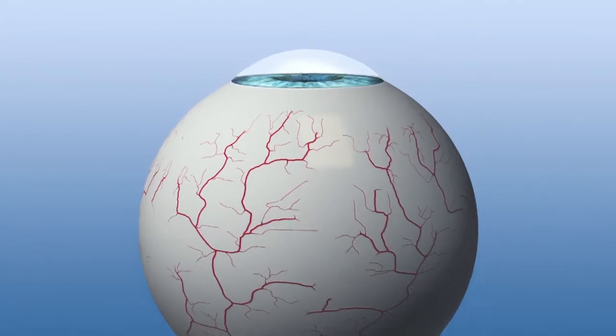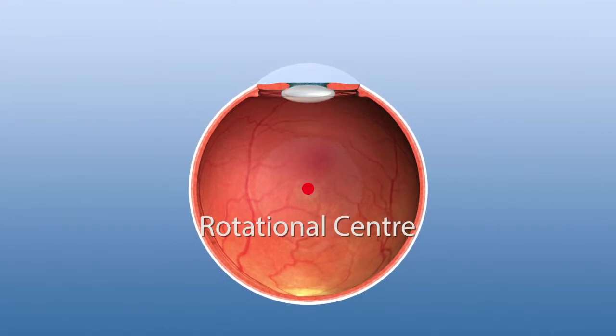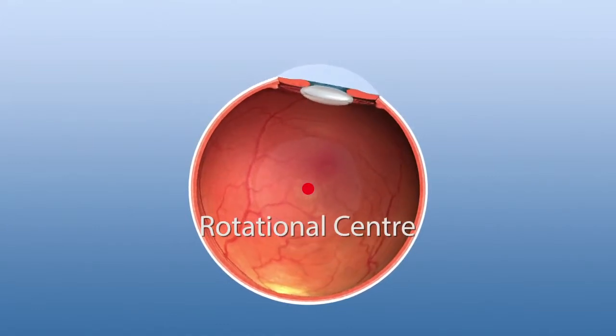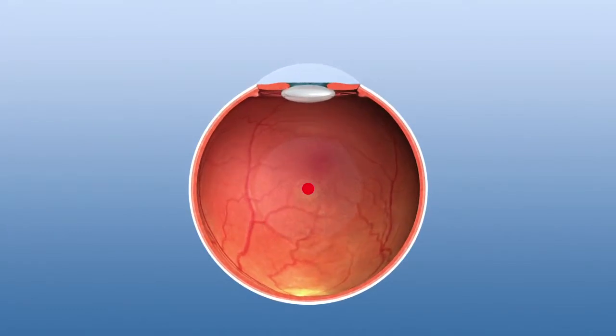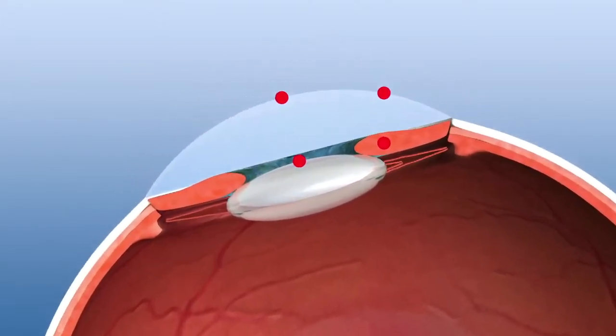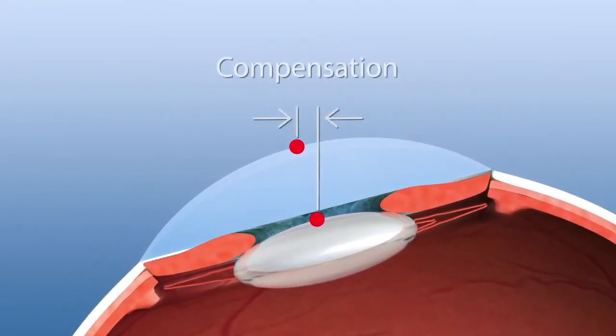In surgical practice, the cornea rolls along the eyeball's rotational center about 13 mm below the cornea. This causes a displacement between the pupil center and the intended ablation center. The Schwind Amaris eye tracker balances all those eye rolling displacements.